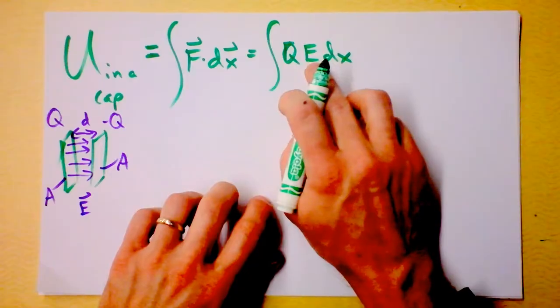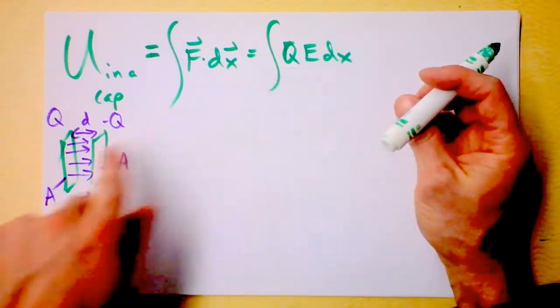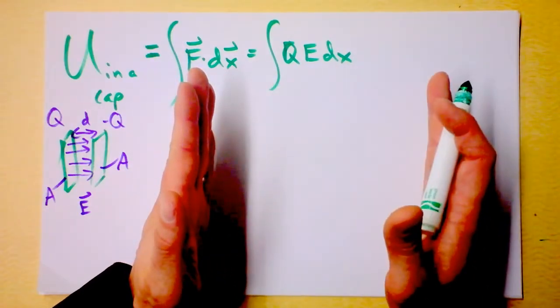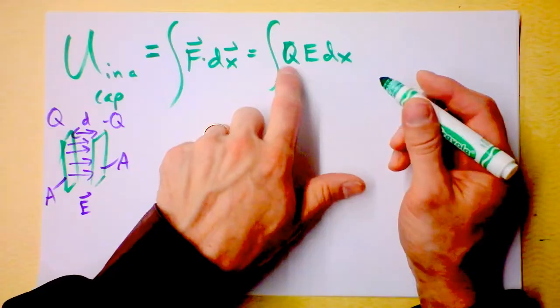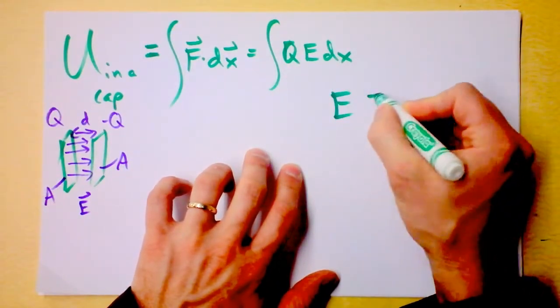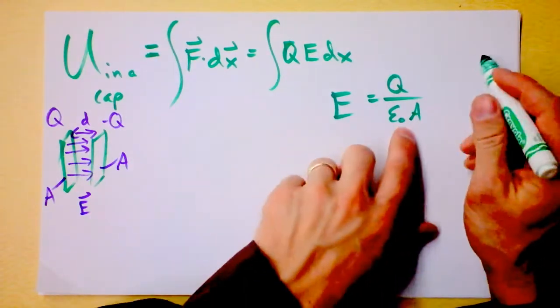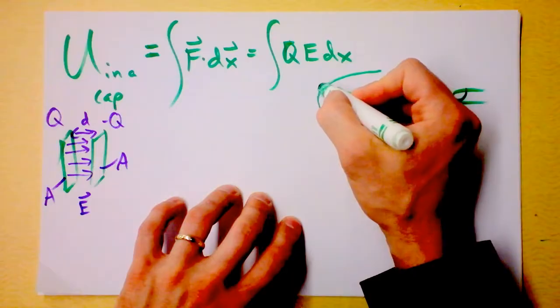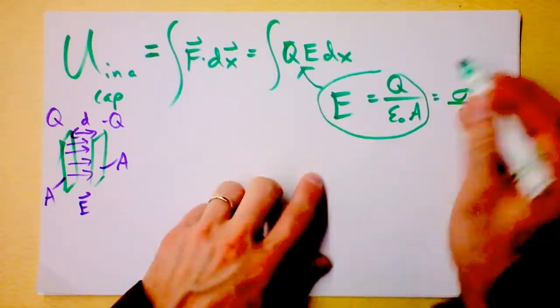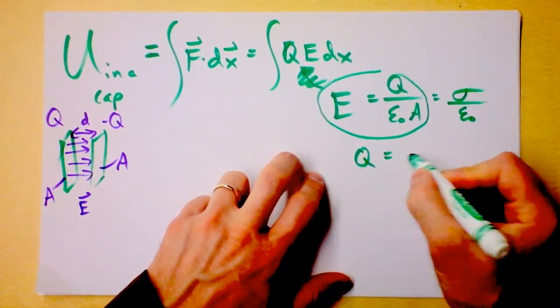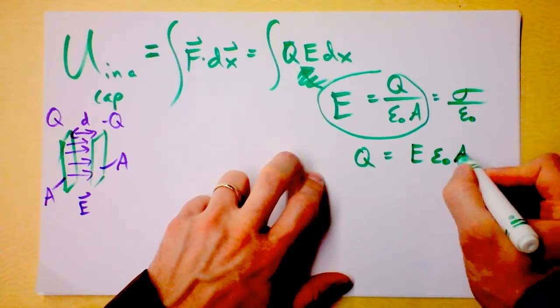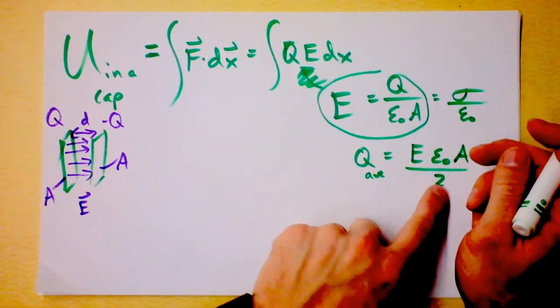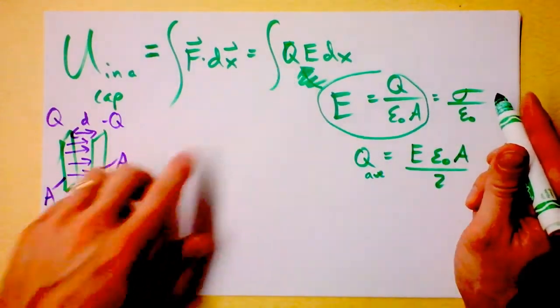Electric field is going to be constant so that's lovely. But we need to plug in something for the charge that's on the plates. I know that the electric field caused by the charge is the total charge divided by epsilon naught times the area. Remember this is just sigma divided by epsilon naught. Let's solve this for charge. Q is electric field times epsilon naught times area and that's the final charge. So maybe the average charge will be divided by 2. I'm going to take this and plug it into that equation right there.